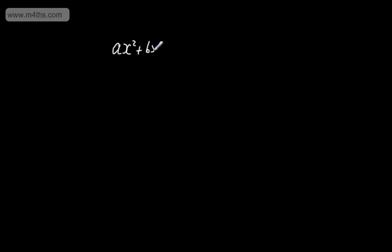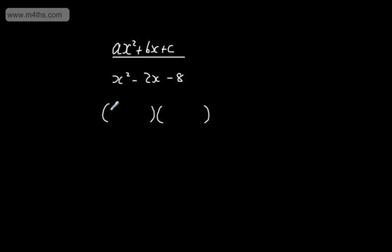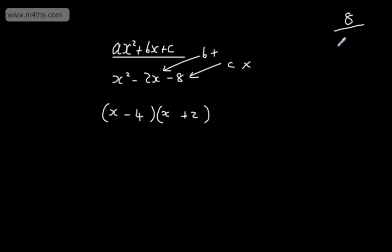Let's look at a quadratic expression. We can write these in the form ax-squared plus bx plus c. A straightforward example is x-squared minus 2x minus 8. If we were asked to factor this, we'd use double brackets with 1x in the front of each bracket. We look for two numbers that multiply to give the c term and add to give the b term — so, multiply to give minus 8 and add to give minus 2. Those are minus 4 and plus 2. We'd consider the factors of 8: 1×8 and 2×4. We need a difference of 2, so it's 2×4. Since the end is negative, one will be positive and one will be negative.